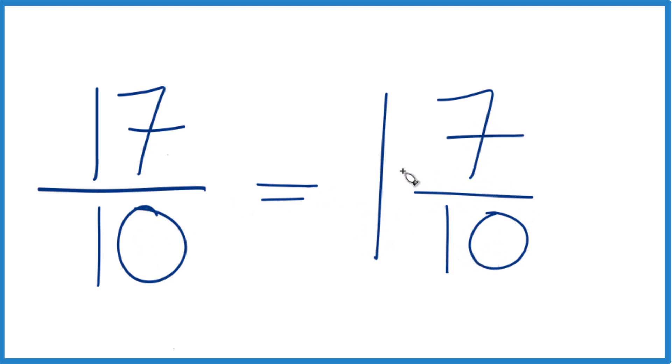You can even check that because one times 10 is 10, 10 plus seven, that's the 17. We just keep the 10 the same here.